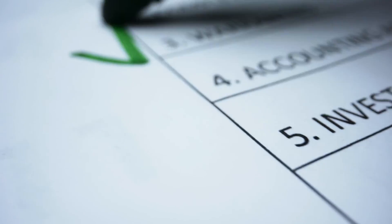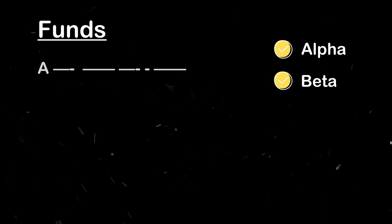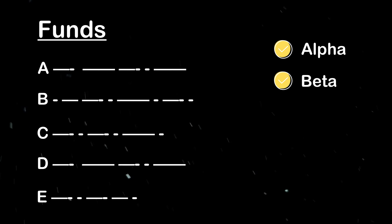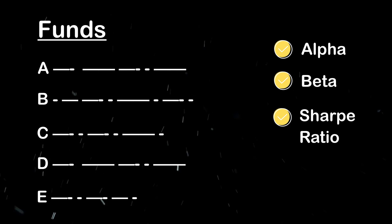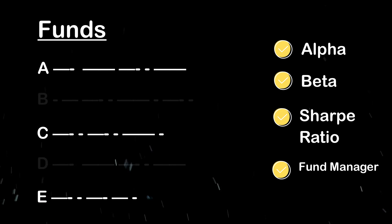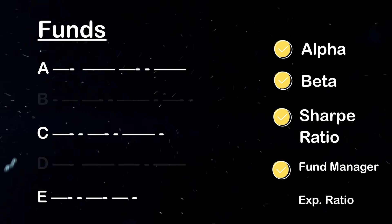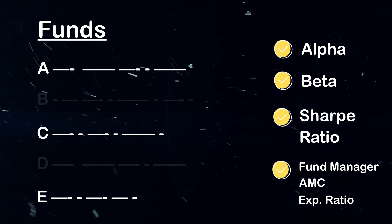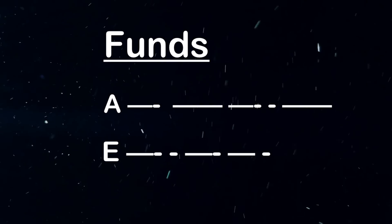You can use all these metrics as filtering mechanisms when choosing a mutual fund. For example, use the combination of high Alpha and low Beta to select a few mutual funds, then use the Sharpe Ratio to narrow down further. Finally, you can use additional information like who the fund manager is, the expense ratio, or information about the AMC to narrow down to two or three funds and go ahead and invest in those.